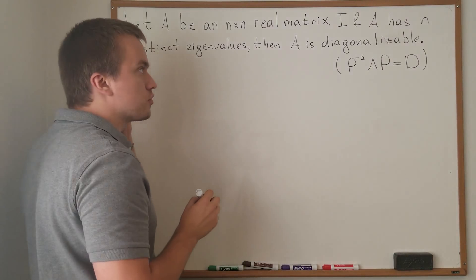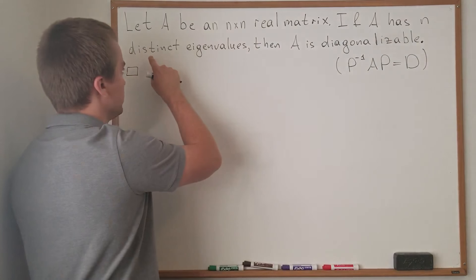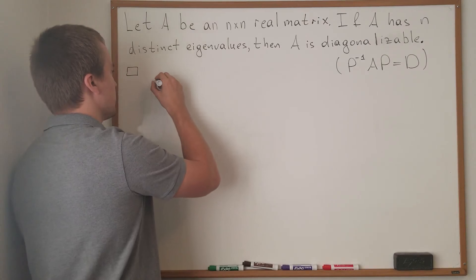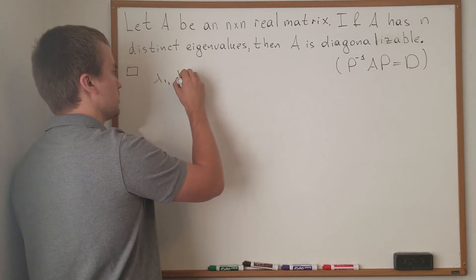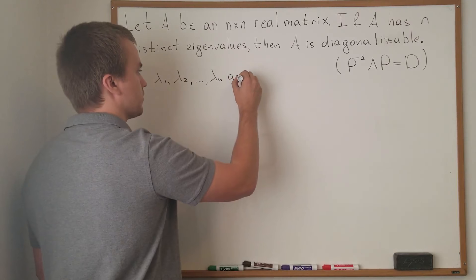First, I'm going to use one assumption: I'm going to use that A has n distinct eigenvalues. So let's say lambda 1, lambda 2, and lambda n are distinct eigenvalues.